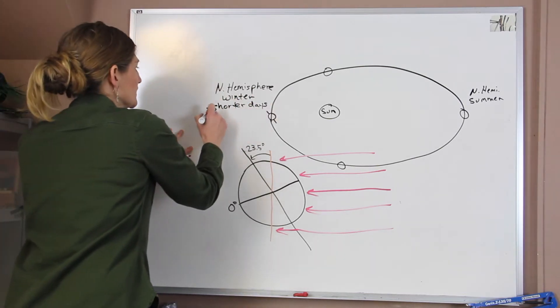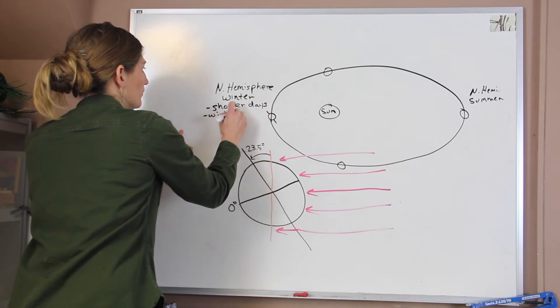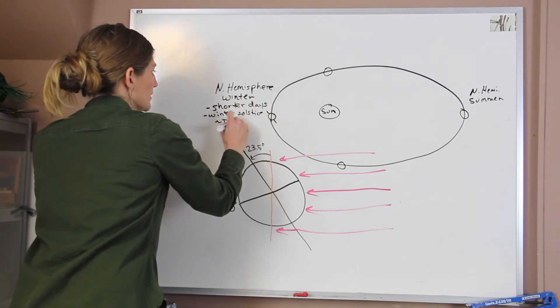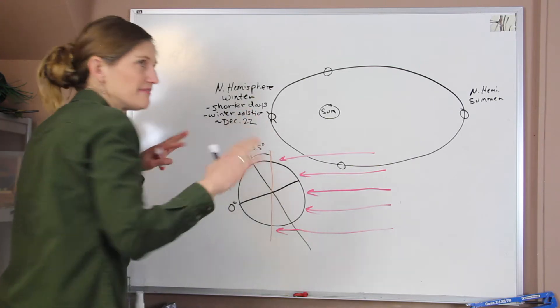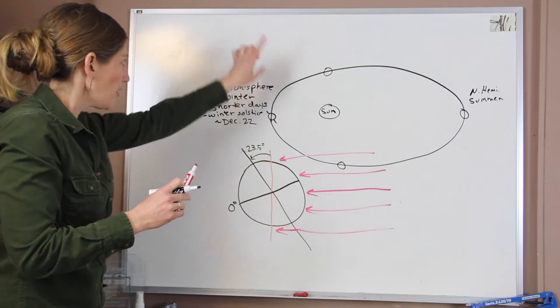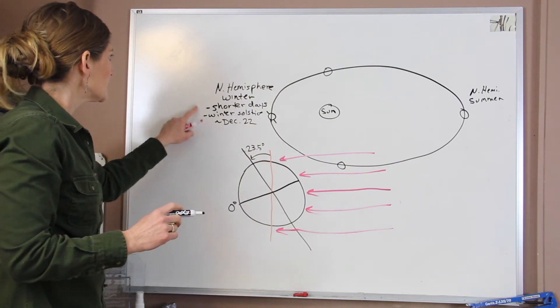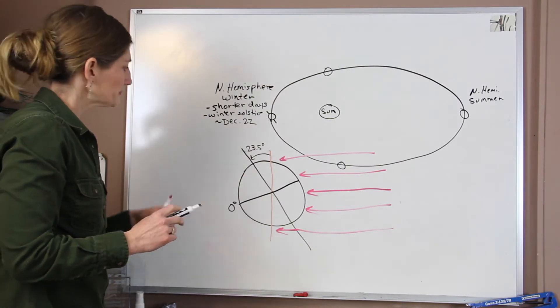We have our winter solstice. And it happens around December 22nd. It varies year to year, just depending on exactly where we are in our orbit around the sun and the relationship for that tilt. So these are the shorter days that we have.